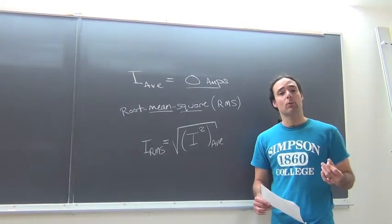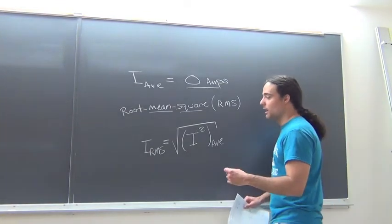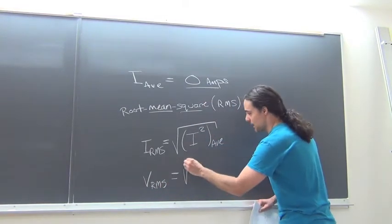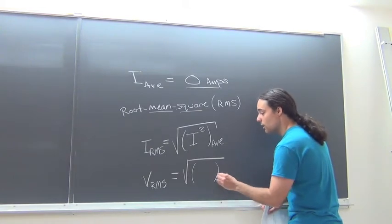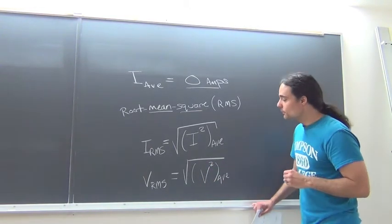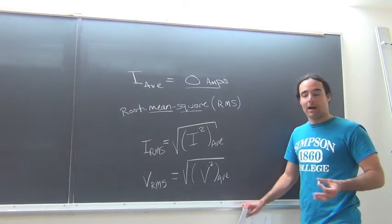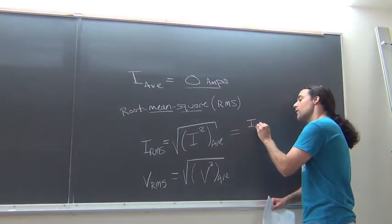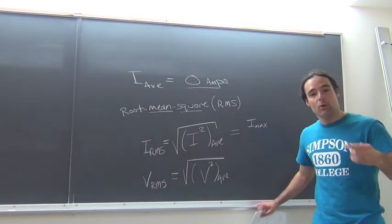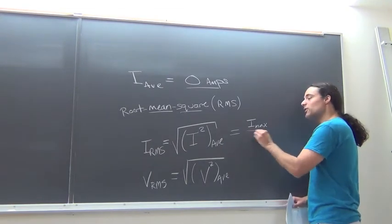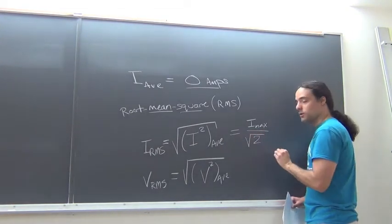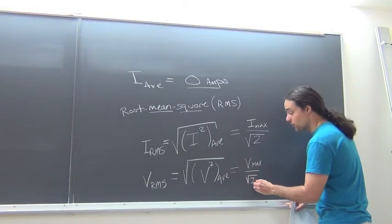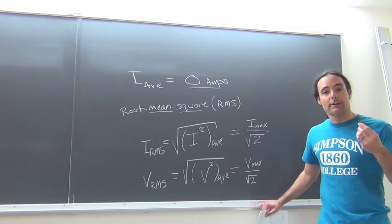I can do the same thing with voltage — I can get an RMS voltage. The root mean square of voltage is: take the square root of the average of the voltage squared. You might wonder how big the RMS current is compared to other values — for example, compared to the maximum current, the peak in my sine wave. It turns out that's just going to be I_max over the square root of two. And similarly, the RMS voltage is going to be V_max over the square root of two. These are more useful quantities to work with than just the average.